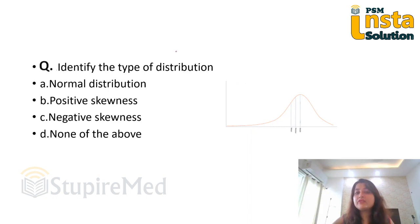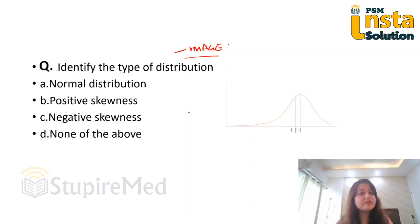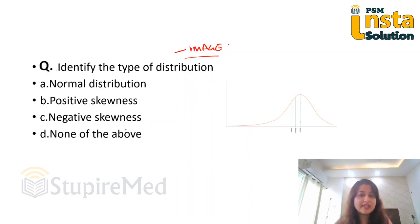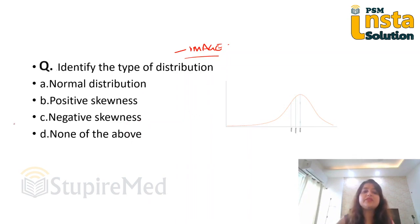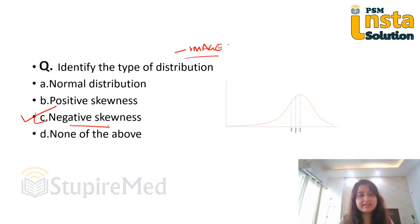Now look at this image. This is also an image-based question. What is this type of distribution indicating? Is it normal distribution, positive skewness, negative skewness, or none of the above? Please remember the correct answer to this is negative skewness. But how did we arrive at it? Let us look at it.